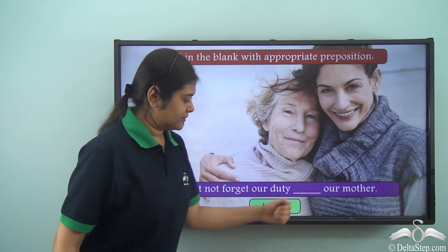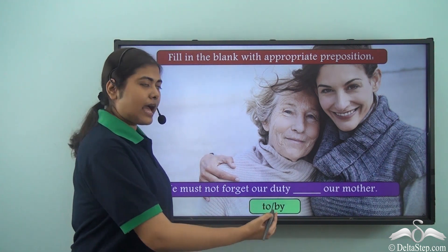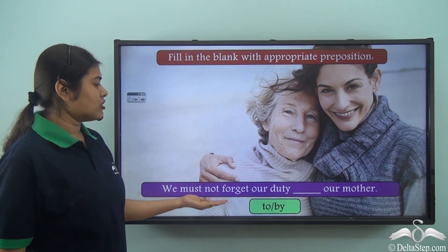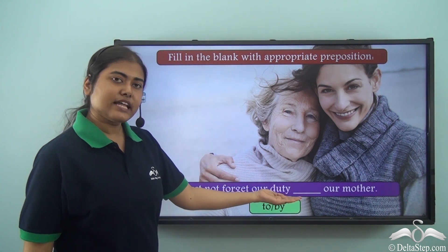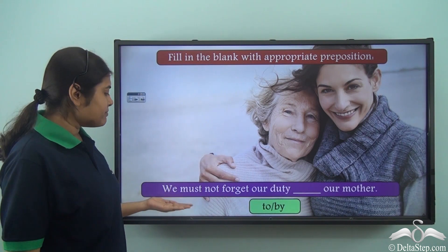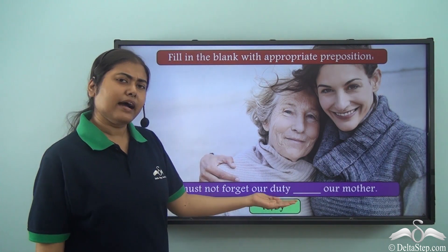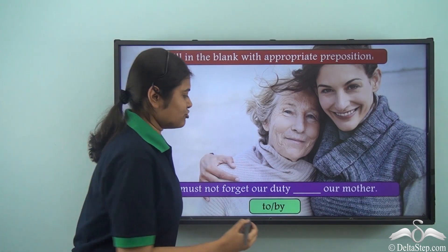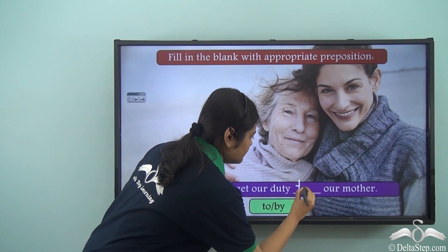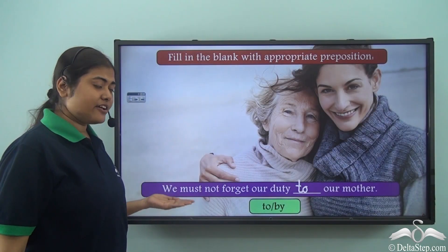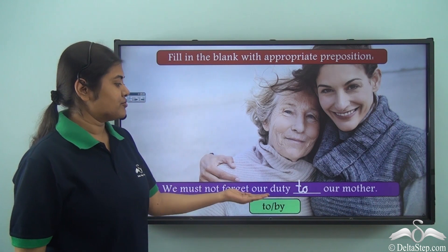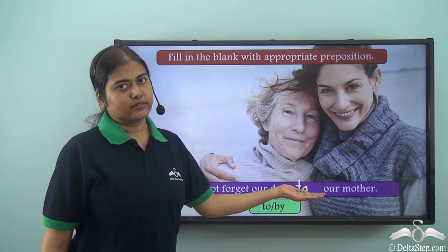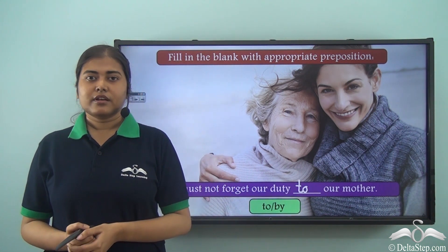Fill in the blank with the appropriate preposition: 'We must not forget our duty ___ our mother.' The options are 'to' and 'by.' If we say 'our duty by our mother,' it does not make any sense. The correct answer is 'to' — 'we must not forget our duty to our mother' means the duty towards our mother.